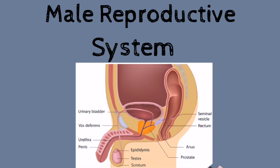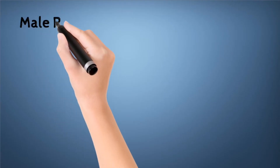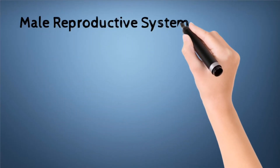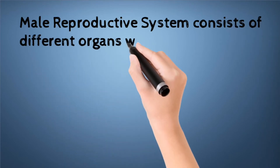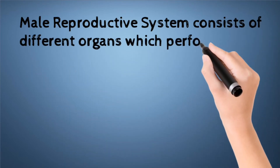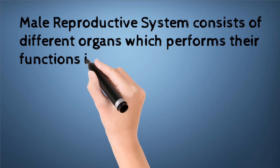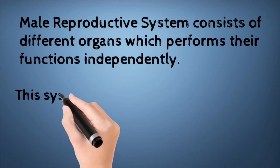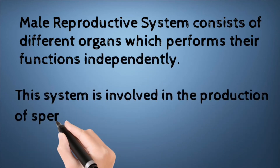So in this video I'm going to tell you the mnemonics to learn the names of the organs. As we know, the male reproductive system consists of different organs which perform their functions independently.